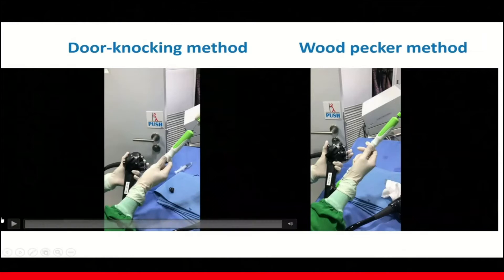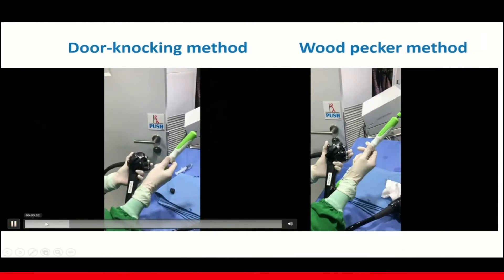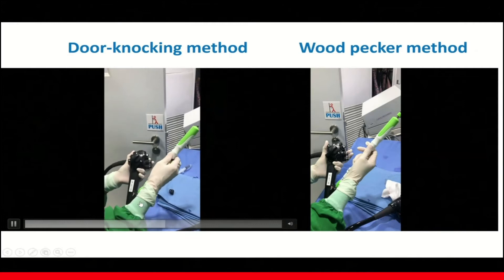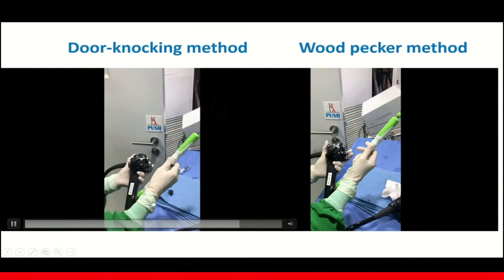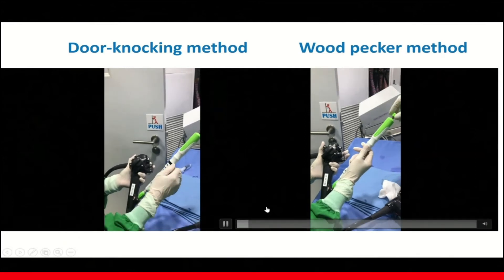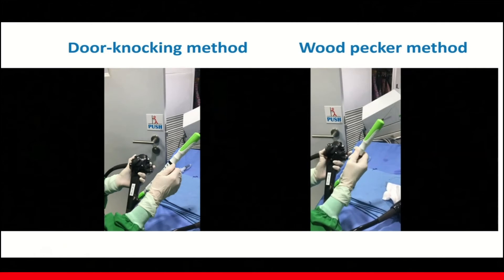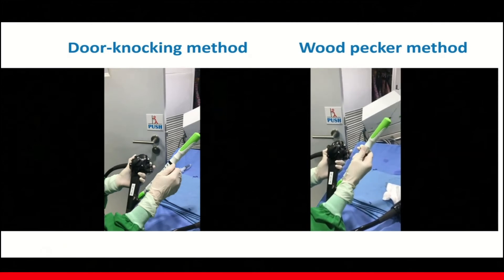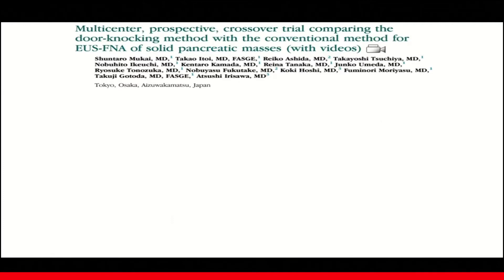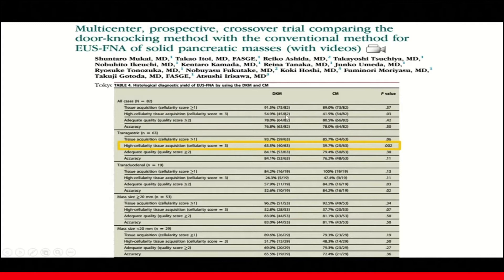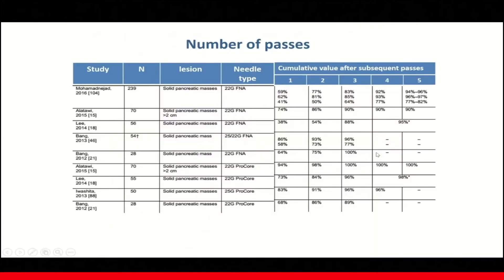The door knocking method involves advancing the needle in quickly, allowing the handle to hit the stopper, creating a door knocking sound, and pulling back slowly during the stroke. The woodpecker technique requires moving the needle finely and rapidly in the lesion — it is good for small lesions of less than 1 cm. A prospective study from Japan comparing the door-knocking method to conventional technique for pancreatic masses showed that the door-knocking method provides better cellularity, but no differences in diagnostic accuracy.